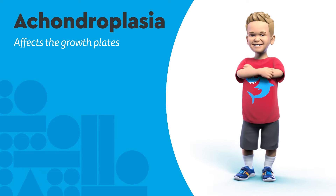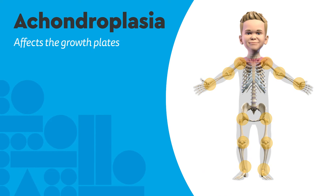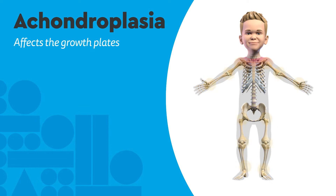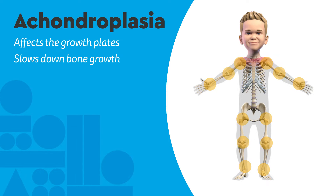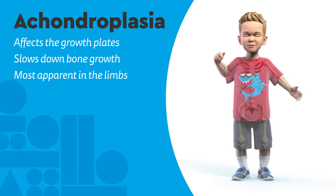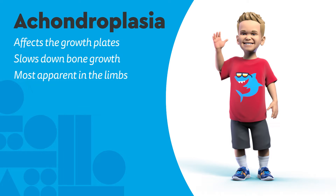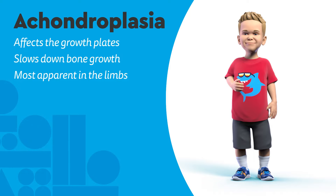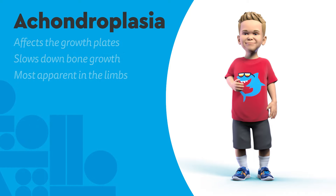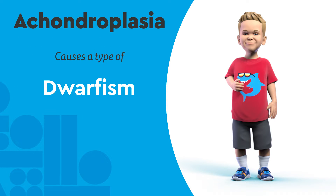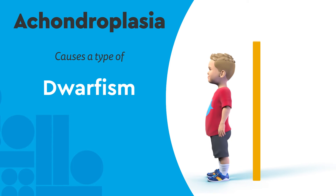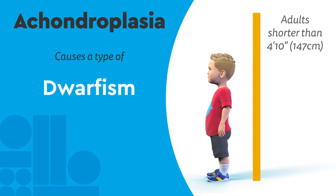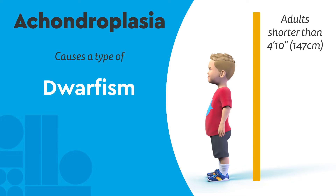Achondroplasia is a condition that affects the growth plates, slowing down the rate of bone growth which is most apparent in the limbs. This results in a type of short stature called dwarfism, a condition where people are, when fully grown, shorter than 4'10" or 147 cm on average.